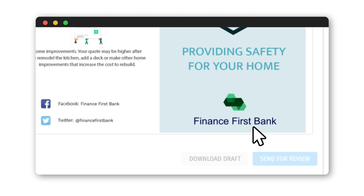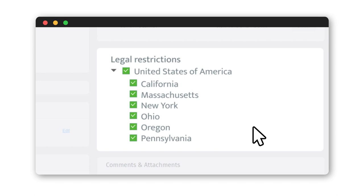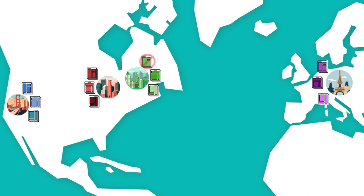To eliminate legal and compliance issues, templates can be locked down by user-specific permissions. For example, users in the New York Mortgage Department can only see mortgage-related templates with copy, offers, and visuals approved for their market.